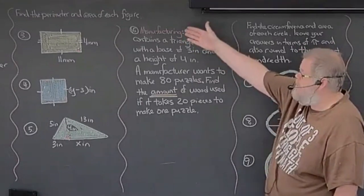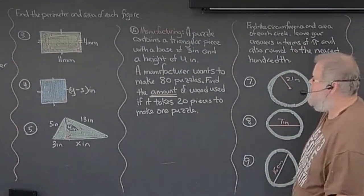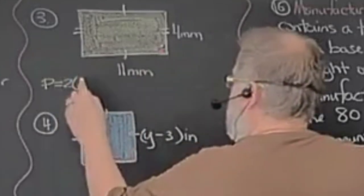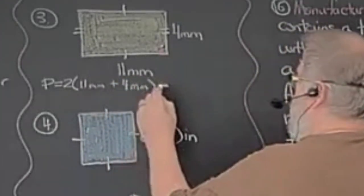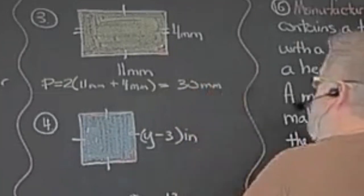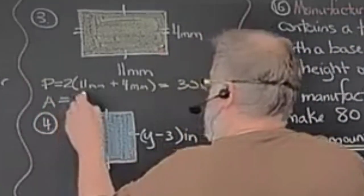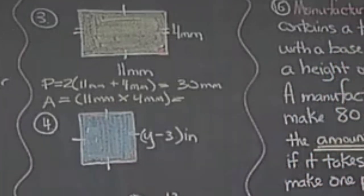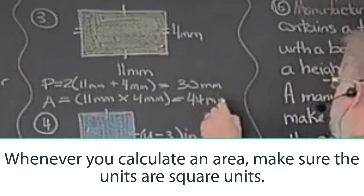Find the perimeter and area of each figure. Here we have a rectangle that's four millimeters by 11 millimeters. So the perimeter formula, capital P is two times the length, 11 millimeters, plus the width, four. So 11 plus 4 is 15, and 2 times 15 is 30. So the perimeter of this particular figure is 30 millimeters. The area of this rectangle is 11 millimeters times 4 millimeters. Now we know that's 44, but the units are going to be millimeters squared. So 44 millimeters squared.